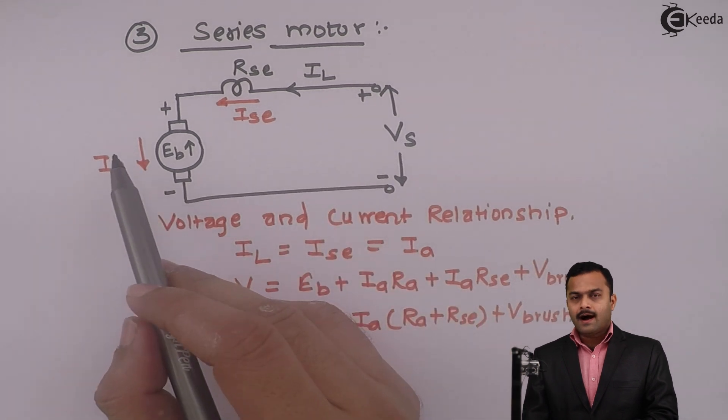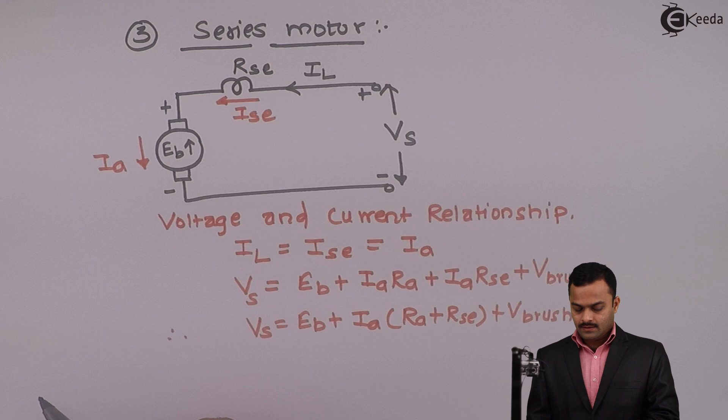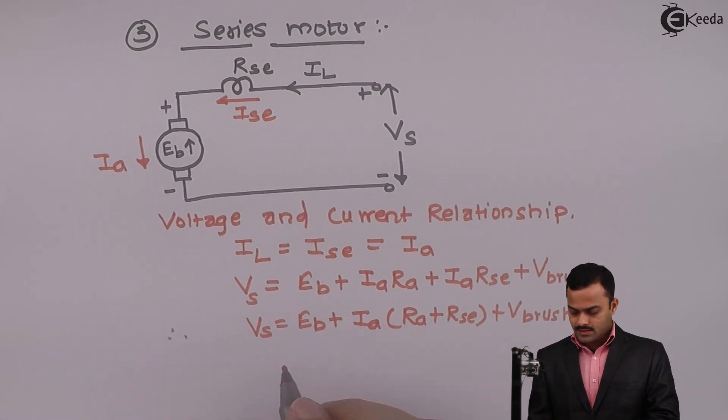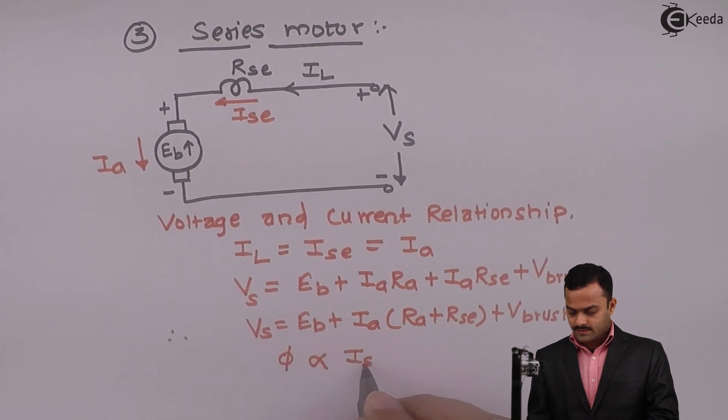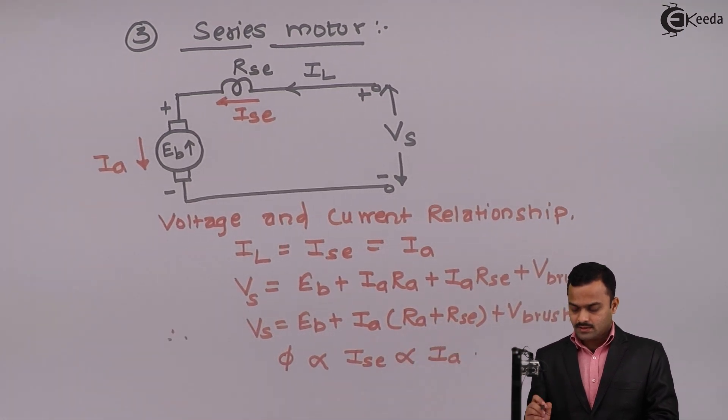Now series motor, armature current is passing through the field winding. Hence, flux produced is directly proportional to Ise which is nothing but field current, or it is directly proportional to armature current Ia. Thank you.